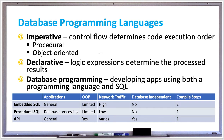There are two types of imperative languages. There's procedural, such as C or COBOL, which are made up of functions or subroutines. And then there's object-oriented, such as Java, Python, or C++, which can store data in object types and have data and methods.